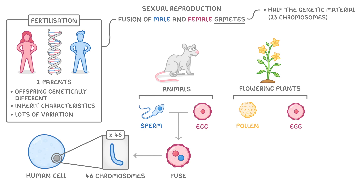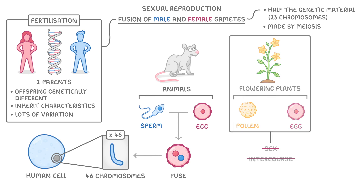We make gametes through a process known as meiosis, which we'll cover in the next video. One thing to point out is that sexual reproduction doesn't actually have to involve sex or intercourse — it just refers to the fusion of male and female gametes. For example, when plants reproduce by the combination of pollen and egg cells, it still counts as sexual reproduction.